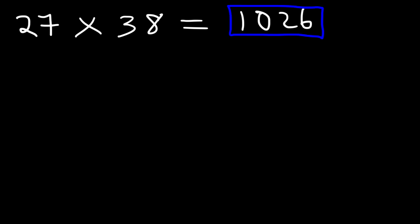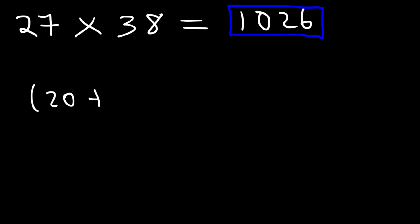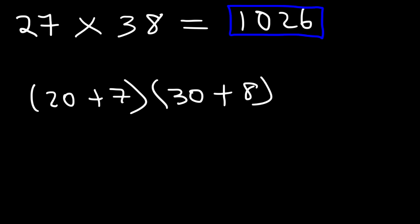Another way is by using the distributive property. For instance, 27 can be written as 20 plus 7, and 38 is 30 plus 8. Now we use FOIL. First, multiply 20 by 30: 2 times 3 is 6, and we have two zeros, so 20 times 30 is 600.